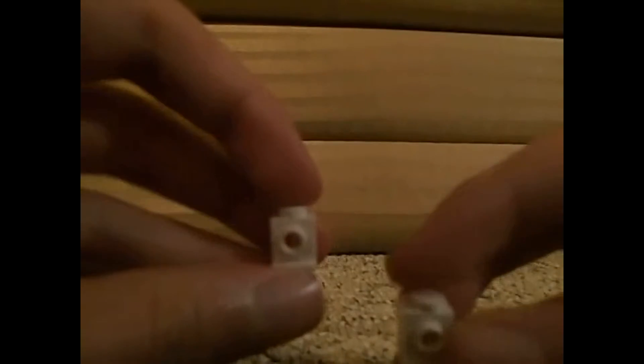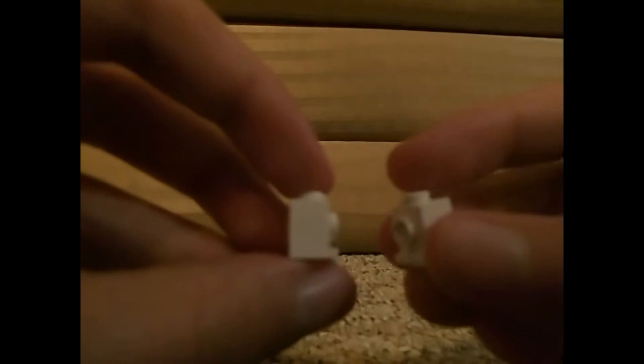In grey or any color you want. Then you get two white one by one bricks with a stud and a hole at the back. After you make this, then you get a one by...